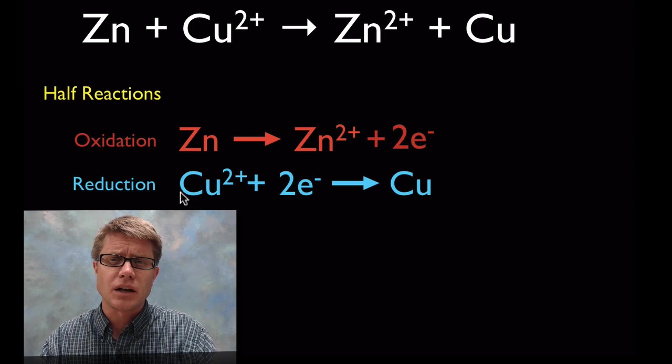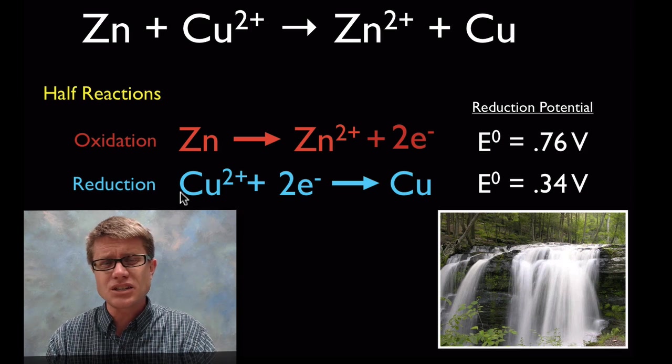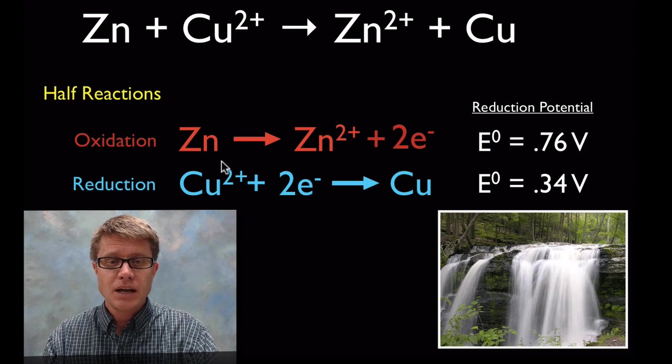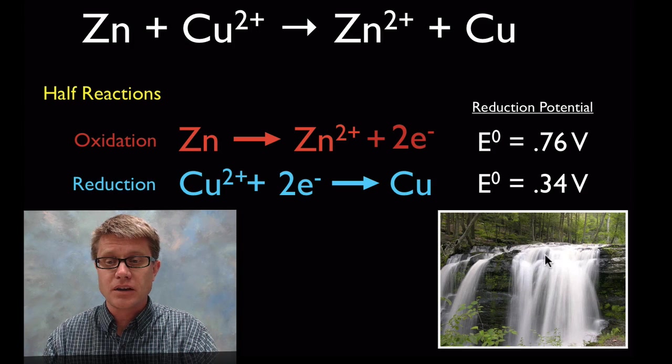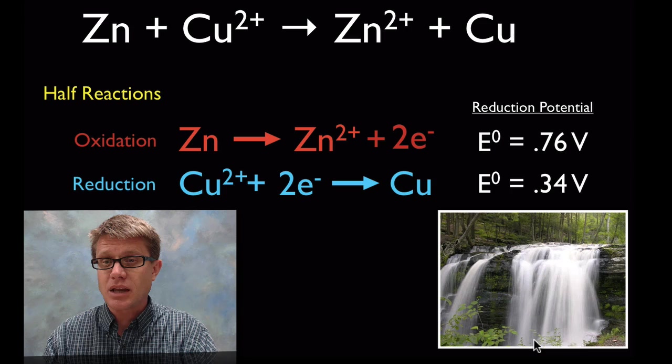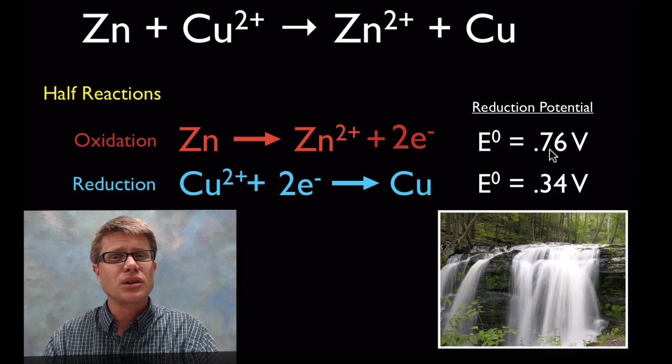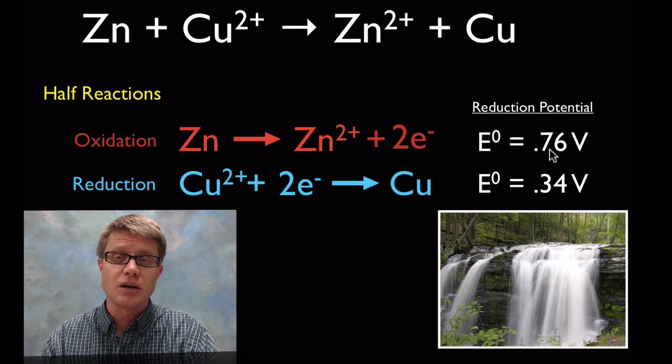But before I actually show you the cell I want to talk about the reduction potential. In other words that's the potential energy that can really be released in a reaction like this. And so the zinc being oxidized is like a waterfall. In other words it has energy up here and it's releasing that energy. And we can measure it as 0.76 volts.